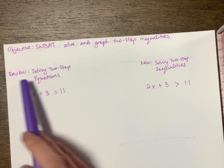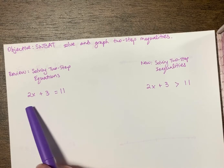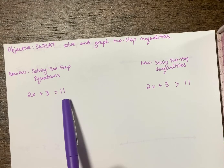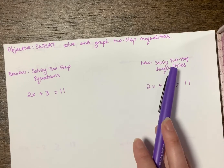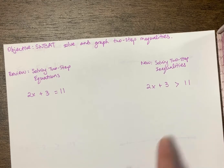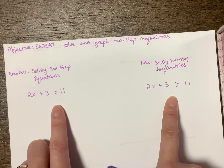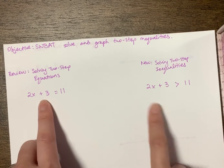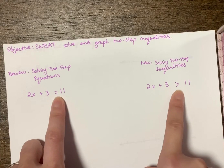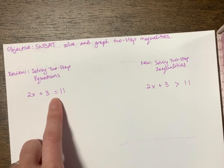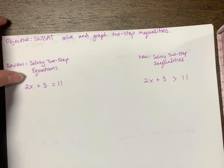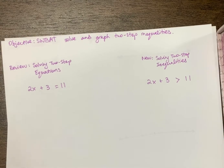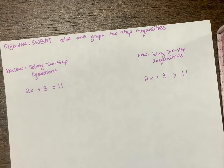Reviewing — we already know how to solve a two-step equation. The new piece today is now you're going to solve a two-step inequality. If you look at the inequality and the equation, they look really similar: 2x + 3 versus 2x + 3. The only difference is the symbol — this is the greater than sign, whereas this is the equal sign. I'm going to show you the difference between the two first.